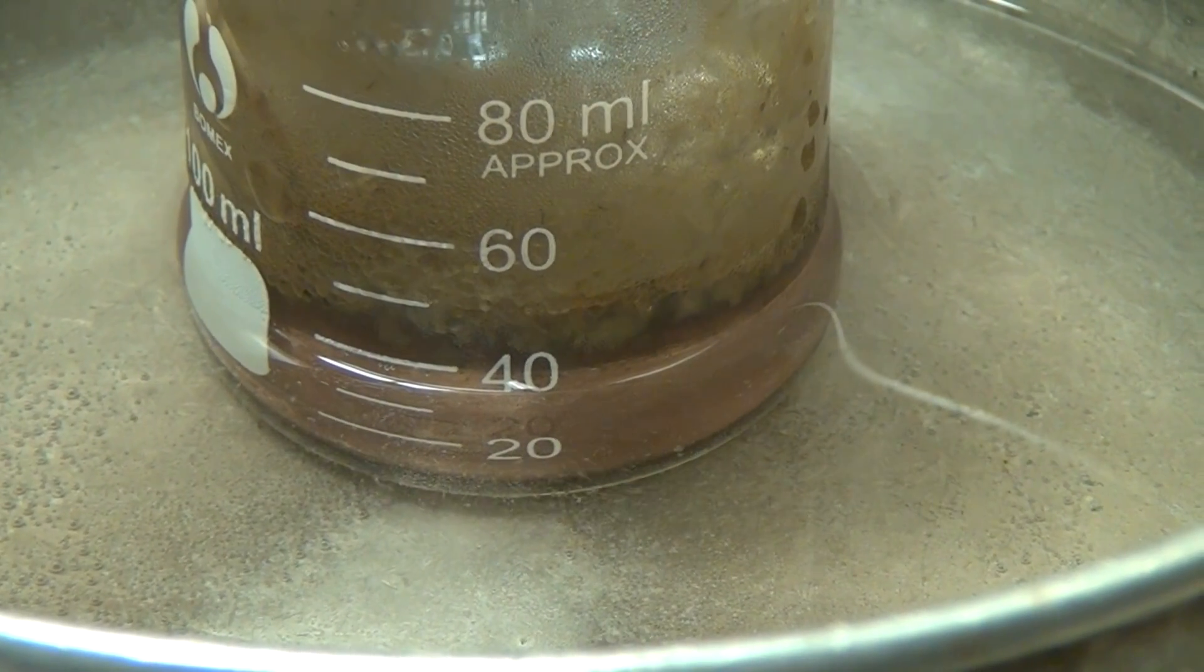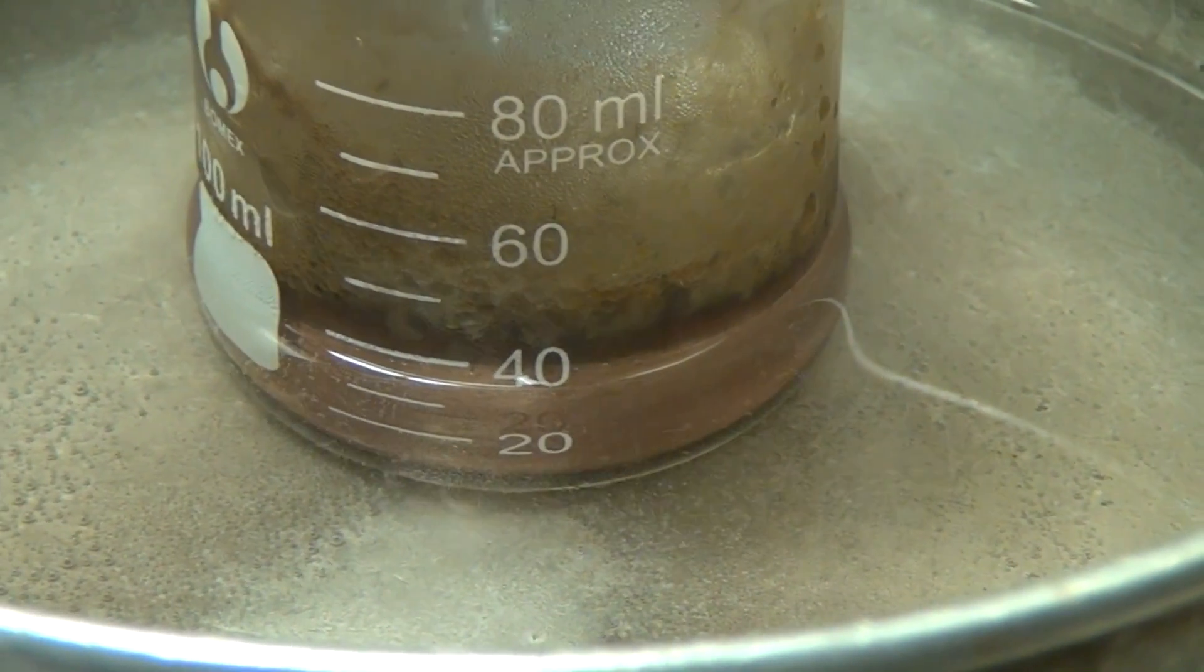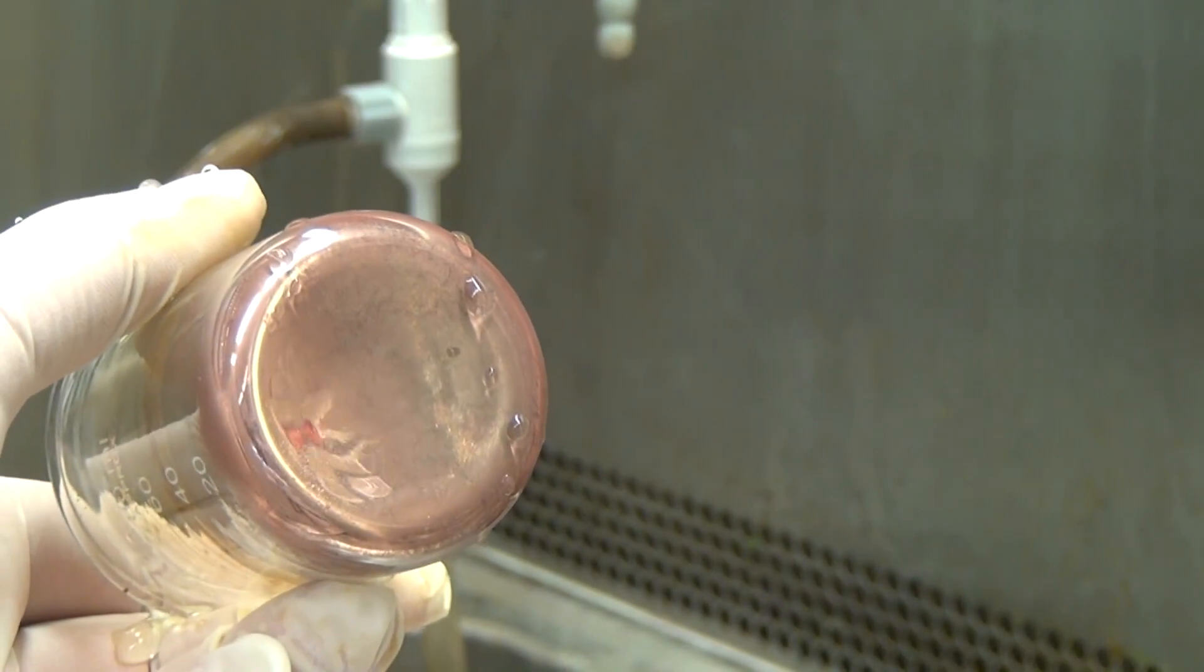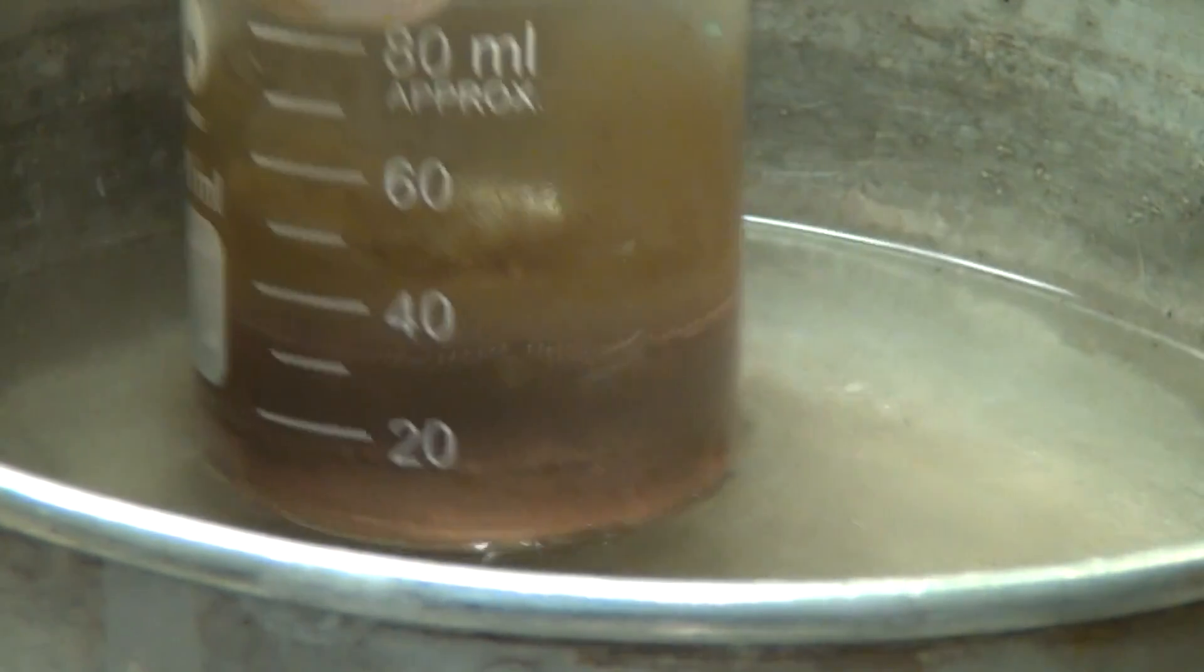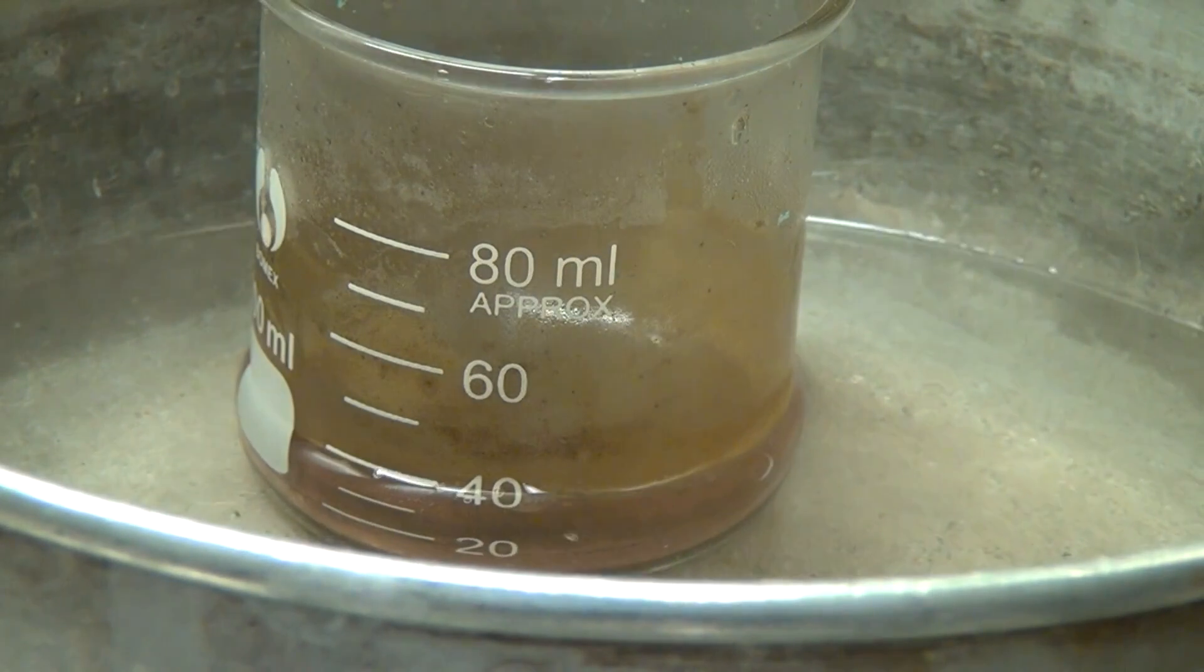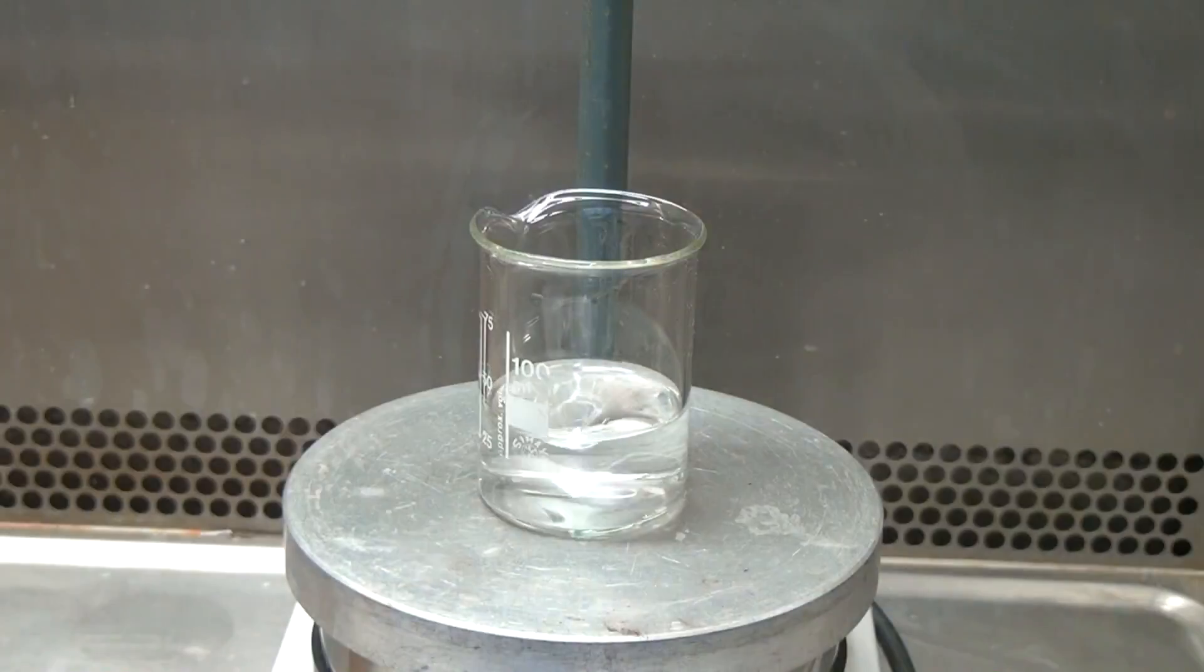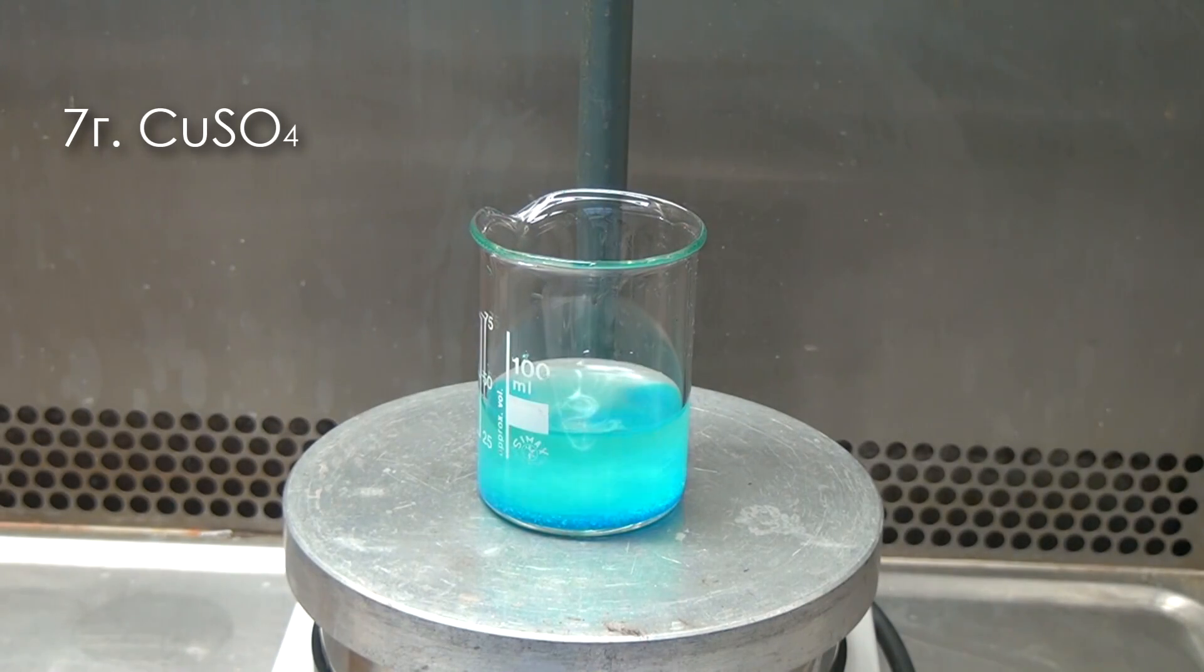Hello everyone. Today we will conduct an interesting experiment called obtaining copper or copper mirror reaction. This reaction is the reduction of copper to the metallic state and depositing on the surface of a glass beaker. First, we take a glass and pour about 50 milliliters of water. Next, we dissolve 7 grams of copper sulfate in the water.